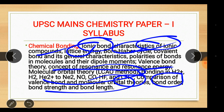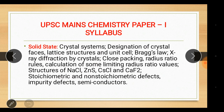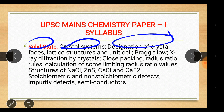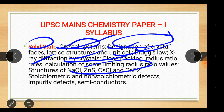Solid state: crystal systems, designations of crystal phases, lattice structures, unit cell, Bragg's law, X-ray diffraction by crystals, close packing, radius ratio rules, calculation of limiting radius ratio values, structures of NaCl, ZnS, CsCl and CaF₂, stoichiometric and non-stoichiometric defects, impurity defects and semiconductors.